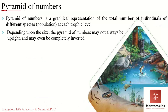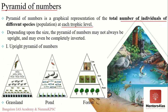The pyramid of numbers represents the number of different organisms occupying each trophic level without considering the size or biomass at any particular level. The pyramid of numbers may be an upright pyramid or an inverted pyramid — so there are different types within this category.